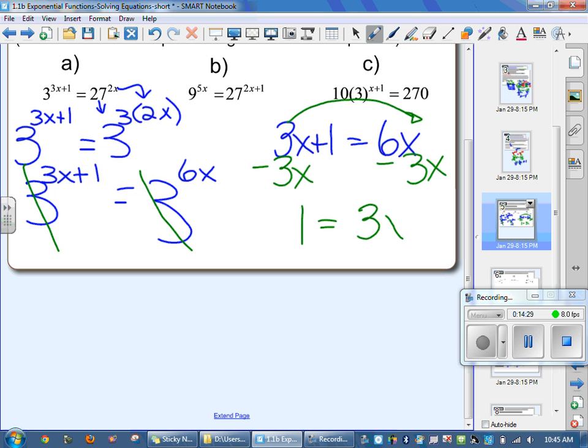Last step. What do I do for my last step? Divide the 3 out. Divide the 3 out. You always divide by the number in front of x. So divide by 3, divide by 3. This is where people usually get confused.